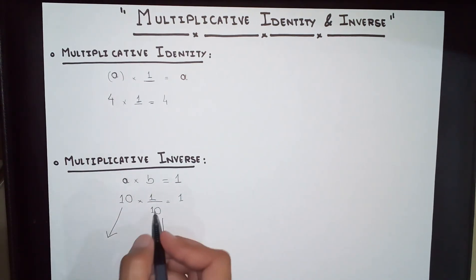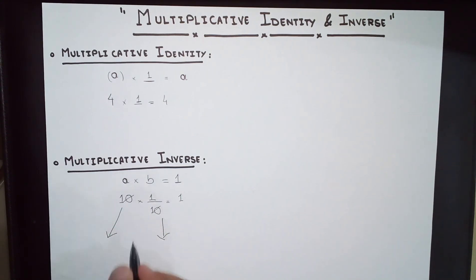Because when you multiply them, they both cancel out, and at the end you get 1. That is all for multiplicative inverse.